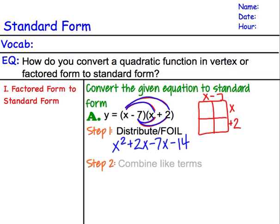Our next step then is going to be to combine like terms. I see here that I have a plus 2x minus 7x, and so I'm going to combine those, so I end up with y equals x squared minus 5x minus 14.